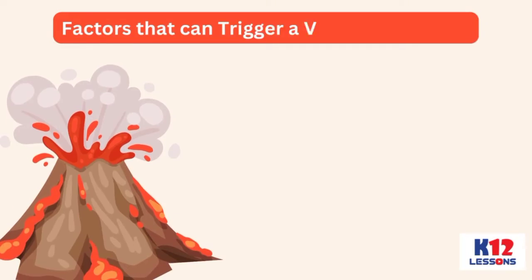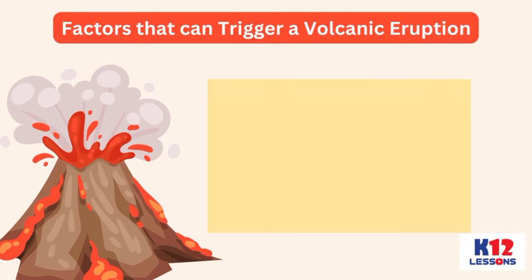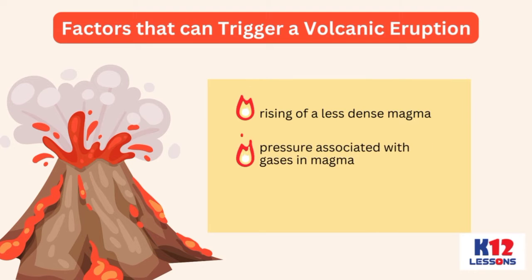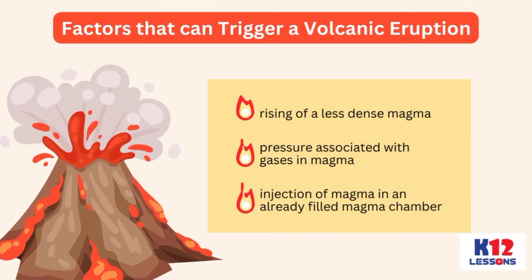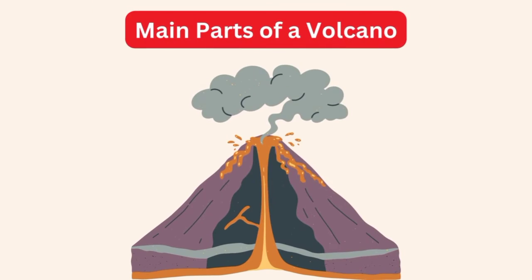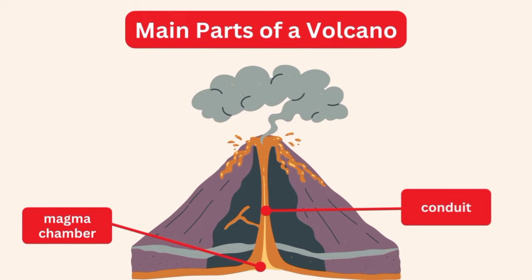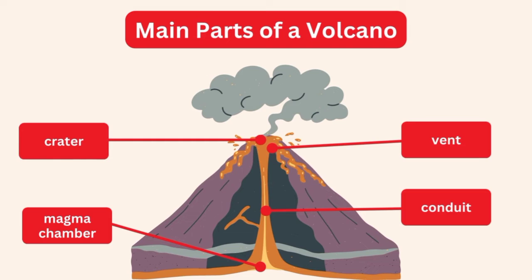There are several factors that can trigger a volcanic eruption. The triggers could be the rising of less dense magma, the pressure associated with gases in magma, and the injection of magma into an already filled magma chamber. The main parts of a volcano are the magma chamber, conduits, vents, and craters.